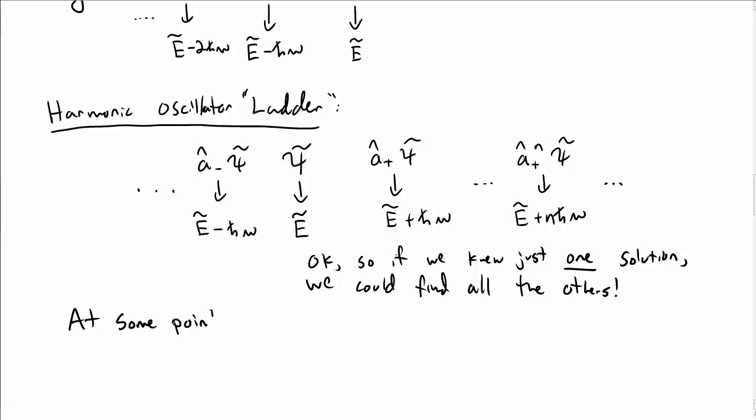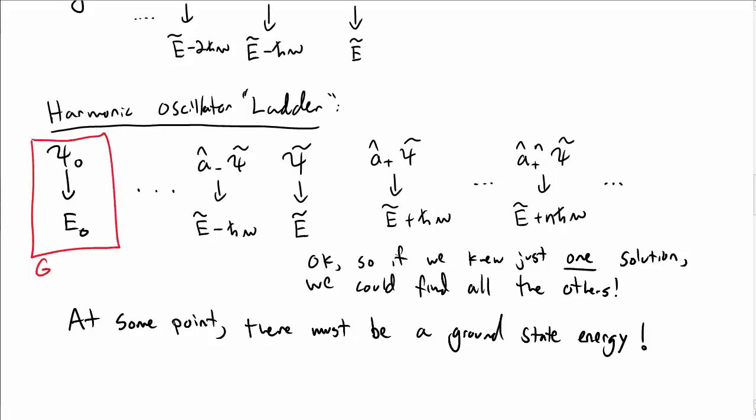At some point when I'm applying the lowering operators, there must be a ground state. We know that all these quantum solutions have some ground state, so there must be some ground state energy and some ground state. I'll call that ψ₀ with energy E₀.